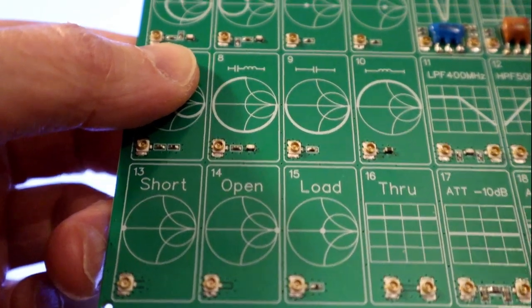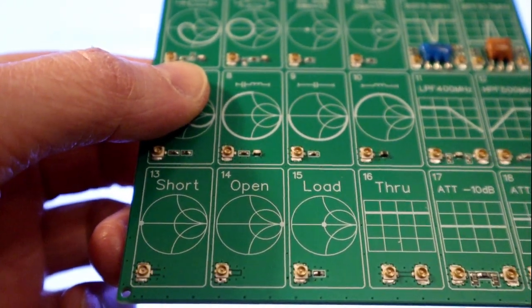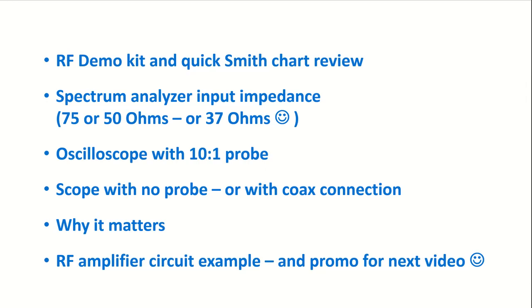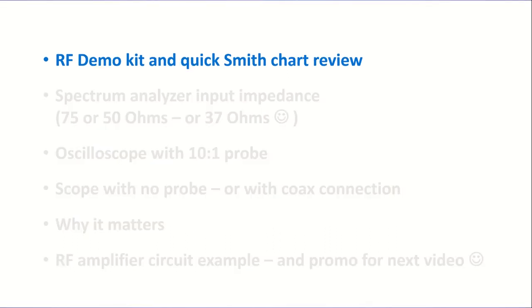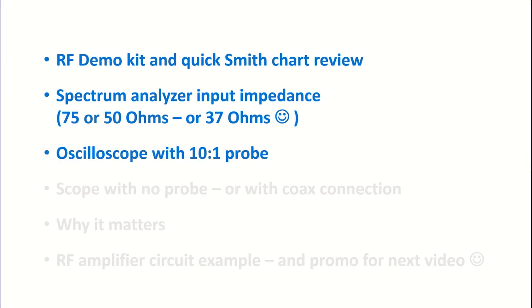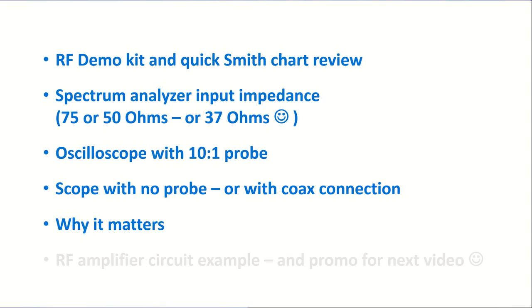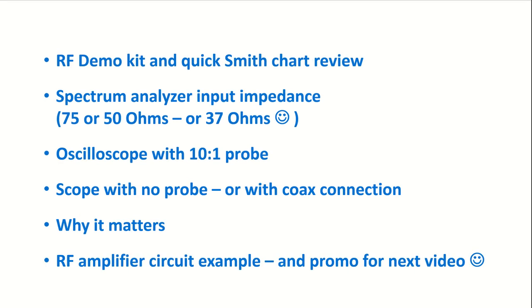We'll also mess around briefly with this little RF demo board that has Smith charts on it, so that we can review what we expect to see on the network analyzer for the different cases. Before we jump in, let's take a quick look at the topics we're going to cover. We'll look at that RF demo kit and talk about Smith charts, then look at the input impedance of my spectrum analyzer, which turns out to be 75 ohm rather than 50 ohm. Then we'll look at the oscilloscope with the 10 to 1 probe on it and find out what it really is. Then we'll look at the scope with no probe and explain why the scope is doing what it is. Finally, we'll talk briefly about why this matters, which will give us a quick look at an RF tuned amplifier circuit. That's going to be a subject of the next video.